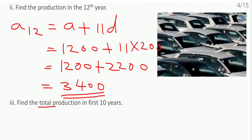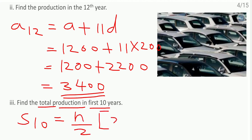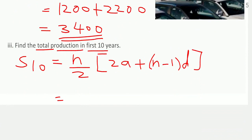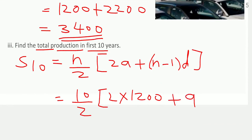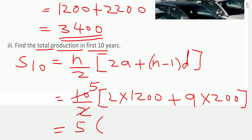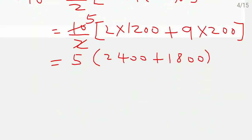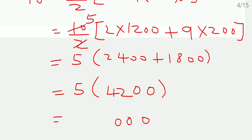Find the total production in the first 10 years, meaning we need S10. The formula is n by 2 times bracket 2a plus n minus 1 times d. Here n is 10, so 10 by 2 times bracket 2 times 1200 plus 9 times 200, which gives 5 times bracket 2400 plus 1800, that is 5 times 4200.